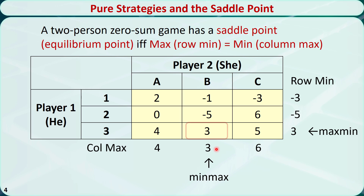This game has a saddle point: 3. A saddle point is a payoff that is simultaneously equal to the maximum of the row minimums and the minimum of the column maximums. If a two-person zero-sum game has a saddle point, then we call the common value the value of the game to the row player. So this game has a value of 3 to player 1. A saddle point can also be thought of as an equilibrium point — neither player would want to move away from this saddle point.